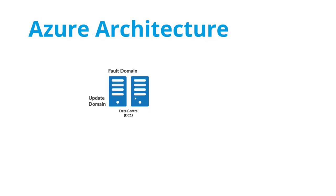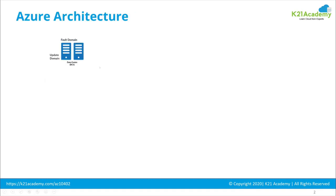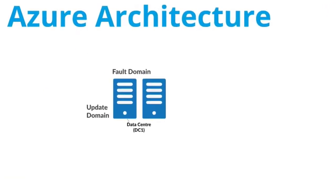This is another fault domain with server update domain one, two, three, and four. So when you select two machines in the same availability set, Microsoft will automatically place these two machines into two different fault domains within a data center. This protects you so that if one fault domain — or one rack of servers — goes down, your second virtual machine will still be running from the second fault domain. So placing two virtual machines in a single availability set, across different fault domains, protects you against a problem in a server rack within the data center.